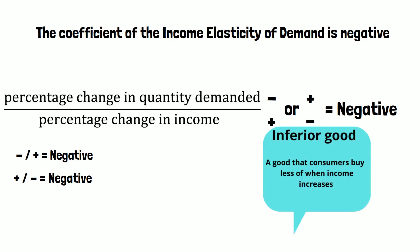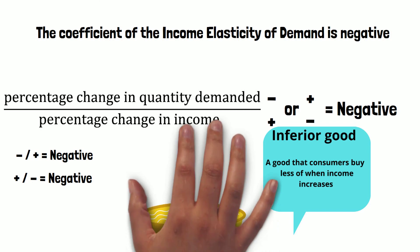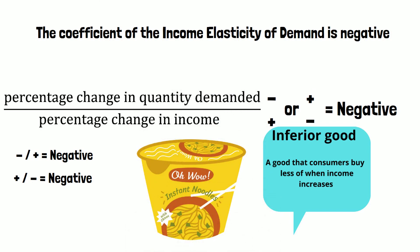This is known as an inferior good. An example of this is pot noodles — people will demand less pot noodles if their income rises. So, a negative coefficient means that we are speaking of an inferior good.